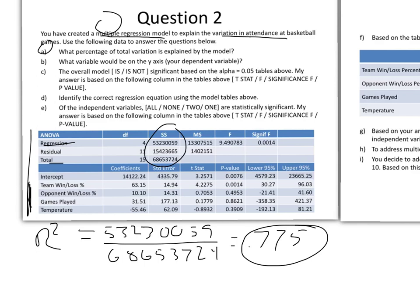The next question is part B. What variable would be on the y-axis, your dependent variable? What we're looking to explain here, the dependent variable, is attendance at basketball games, so that is the answer to part 2. Attendance would be on the y-axis. That's our dependent variable.